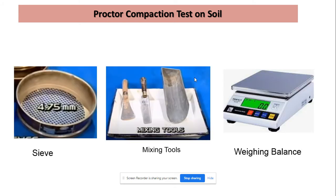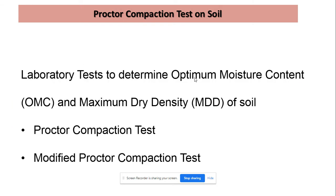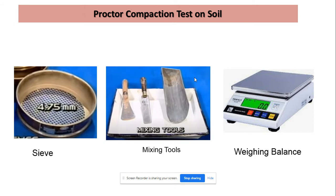First of all, we will take a 4.75 mm sieve — sieve number 4 — and we will use this sieve for sieve analysis of soil. The soil particles that pass through the 4.75 mm sieve are taken, and usually a large amount like 2 kg or 3 kg is taken because we have to perform many trials for obtaining the optimum moisture content curve.